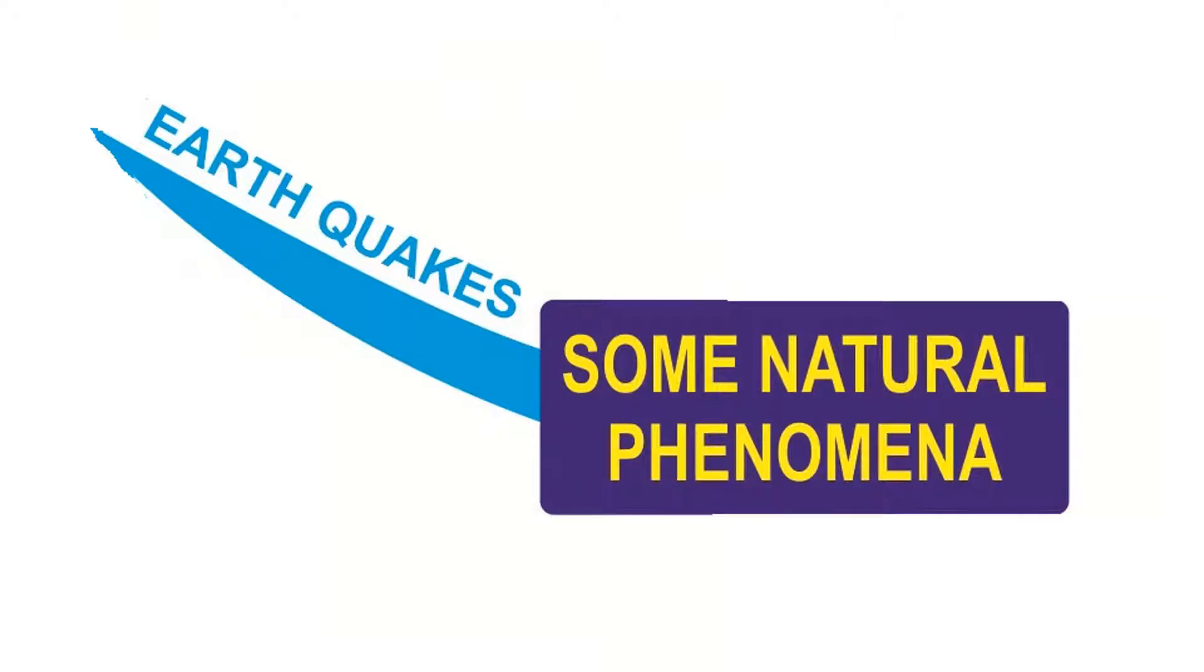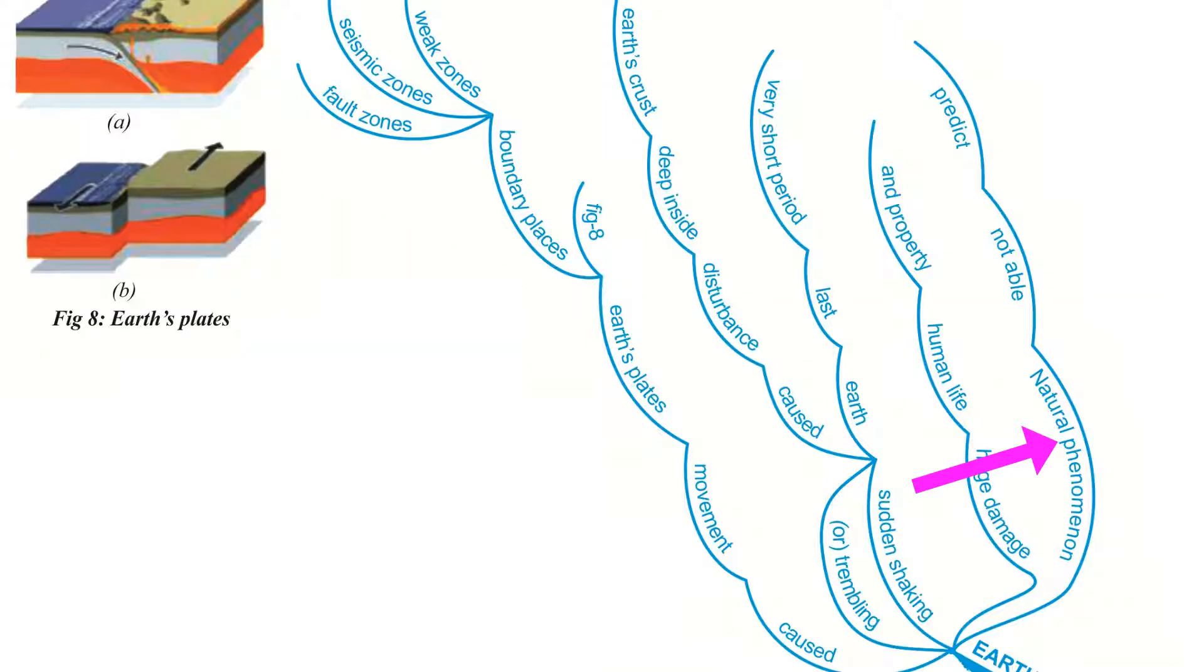Now see the third branch: earthquakes. Earthquake is a natural phenomenon, but we cannot predict it. It causes huge damage to human life and property. Earthquake means sudden shaking or trembling of earth which lasts for a very short period of time.